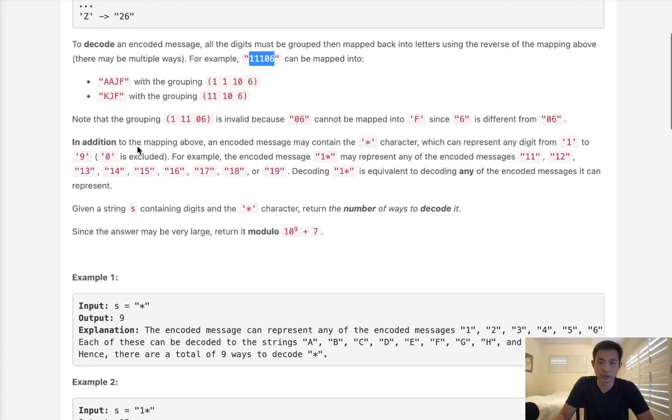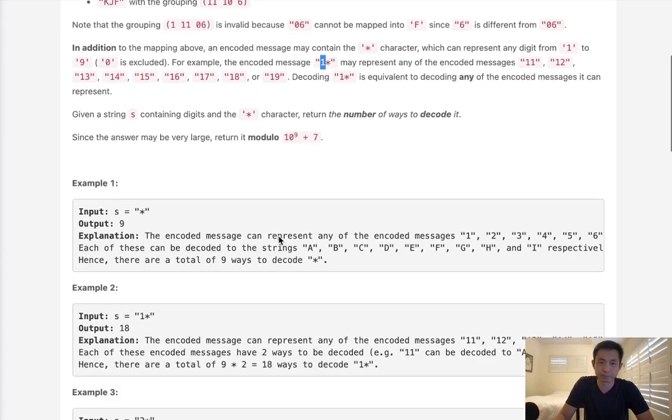In addition to the mapping above, an encoded message may contain a star character which can represent any digit from 1 to 9. Zero is excluded. For example, if we had one star, this can be represented by 11, 12, 13 all the way to 19. So that means we have to figure out how many ways we can decode this.